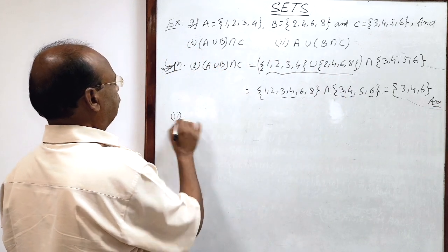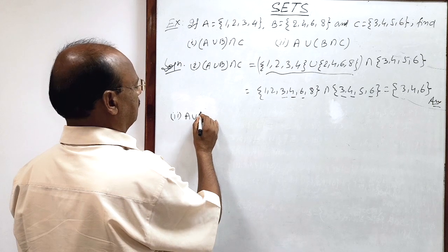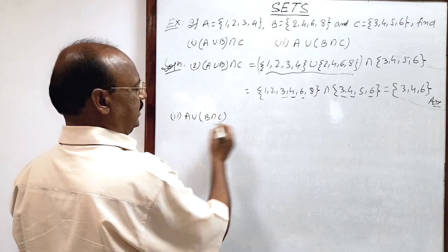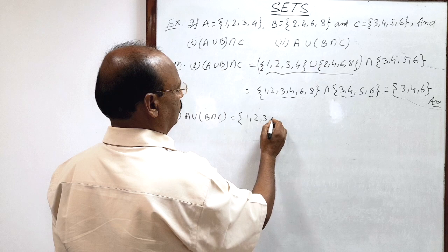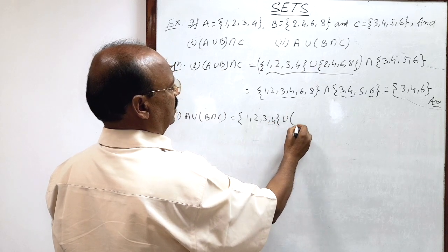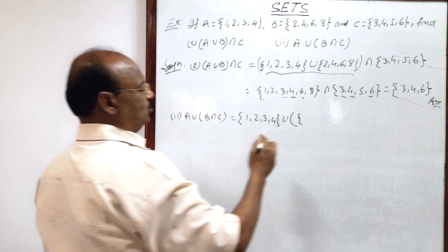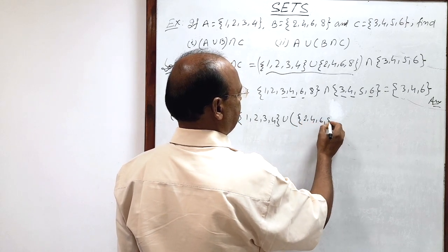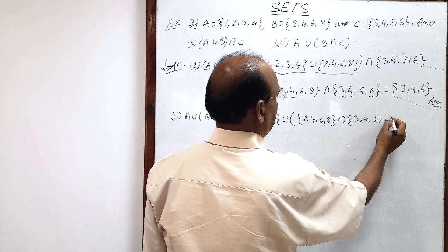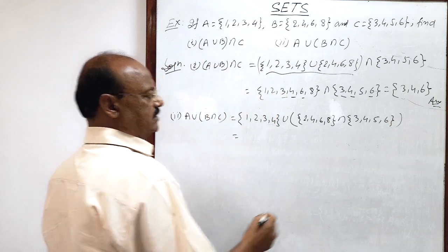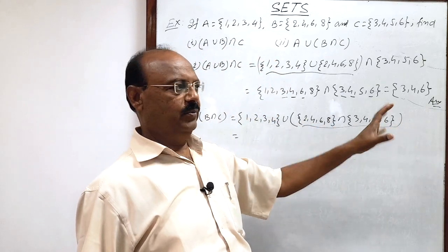Now let us see the second part. Here we have to find A∪(B∩C). Set A has elements {1, 2, 3, 4}, union, and B∩C is inside a bracket. B has elements {2, 4, 6, 8} and C has elements {3, 4, 5, 6}. As you know, first evaluate the operation inside the bracket, so the bracket should be solved first.